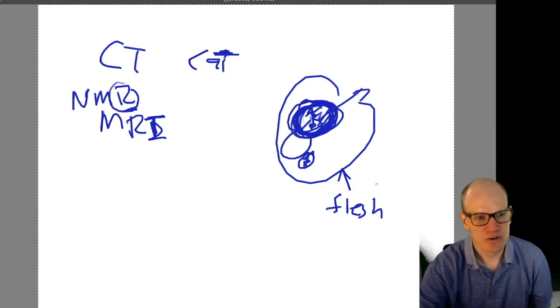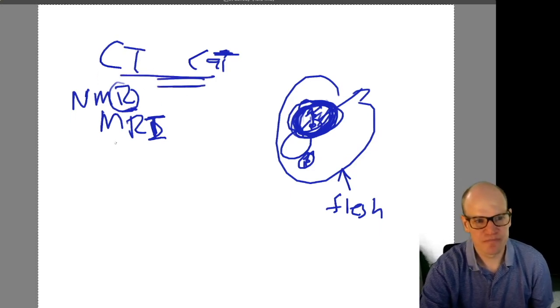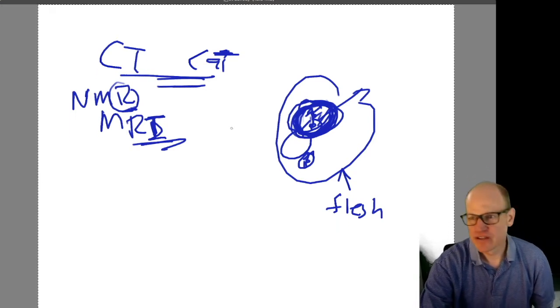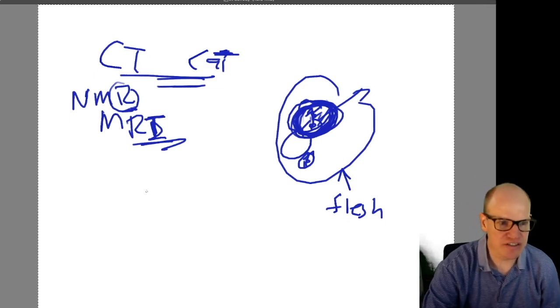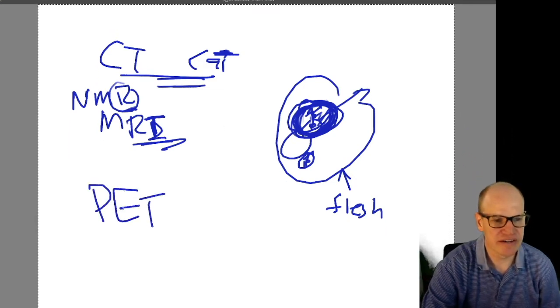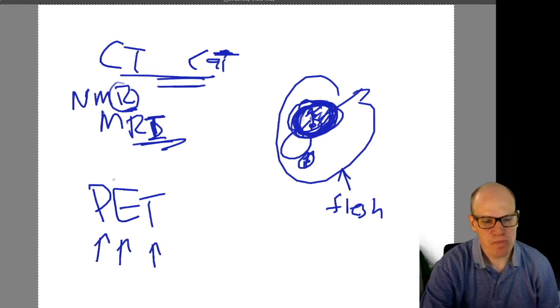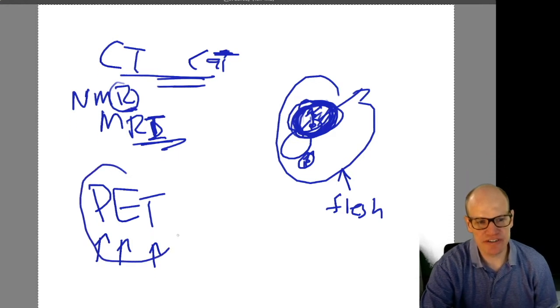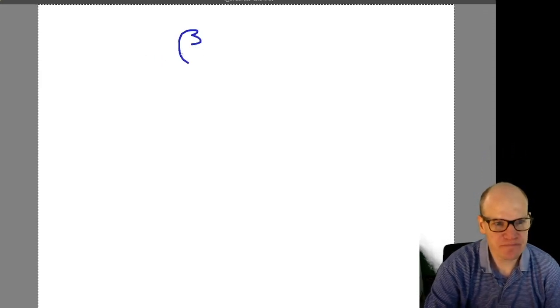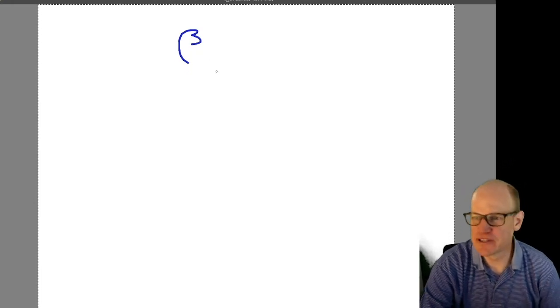Where there's water, there's lots of hydrogen, so MRI specifically targets regions with lots of hydrogen. X-rays typically give you an image of where there's no hydrogen. The third type of medical imaging is called a PET scan — positron-electron tomography, where 'tomography' again means 'to map.'